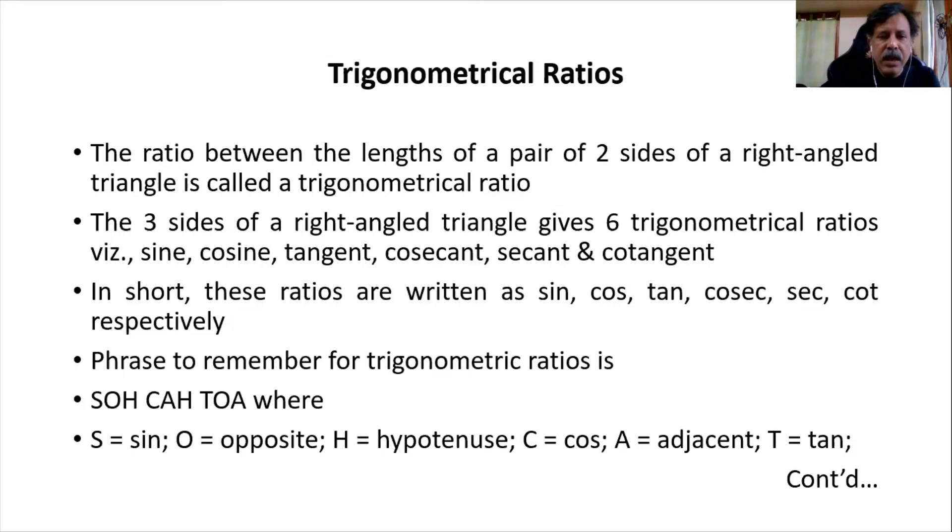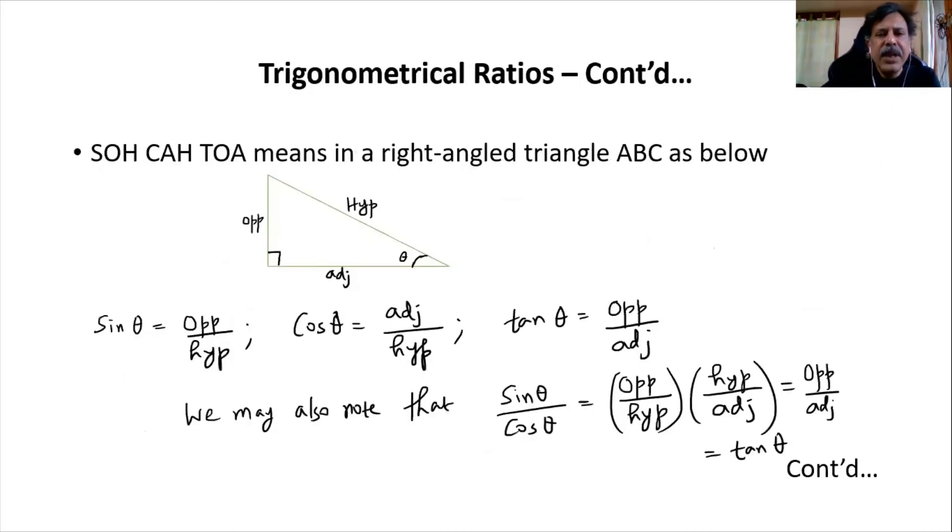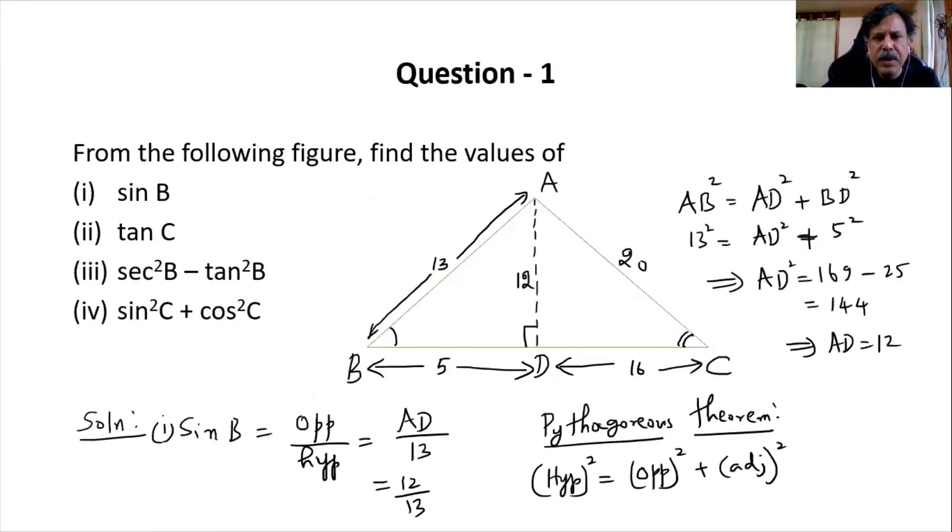We have seen there are six different trigonometric ratios, which are sine, cos, tan, cosecant, secant, and cot. Then we understood one phrase called SOHCAHTOA. Then we did three different problems to apply what we learned in theory.